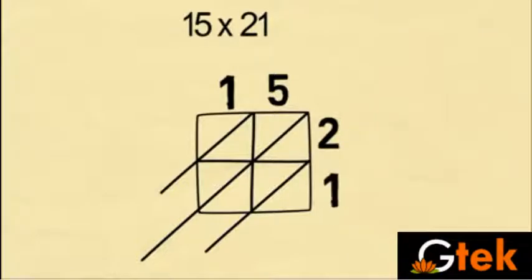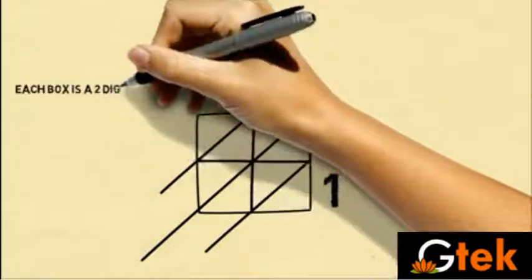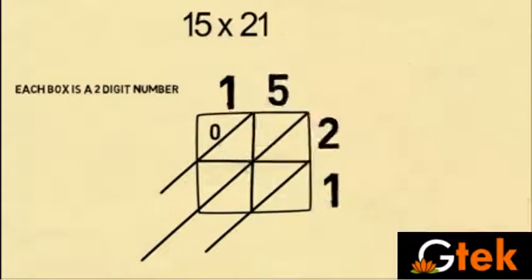1, 5, 2, 1. So each box is a digit number. So I am considering in this way. 0, 2, 1, 0. So 0, 1. 0, 5.